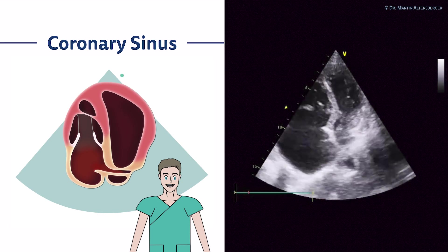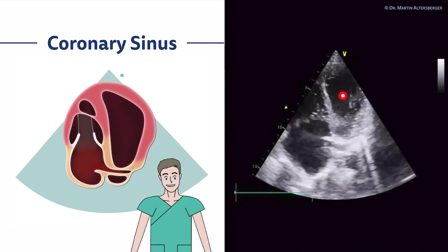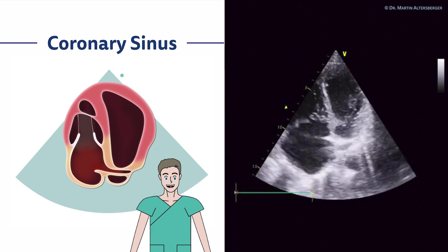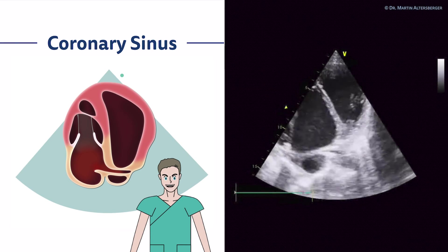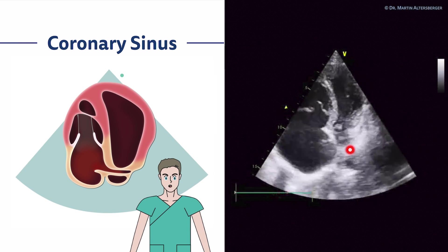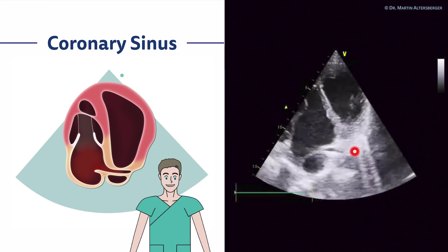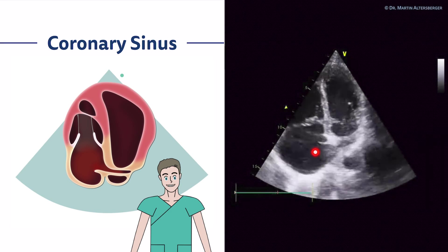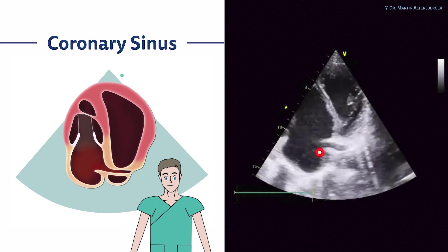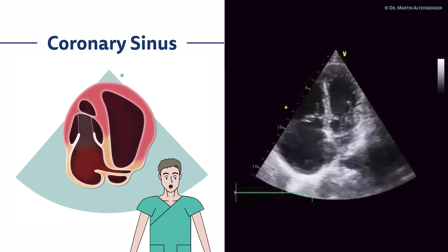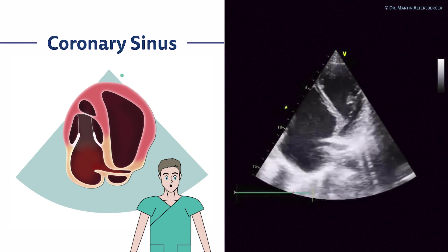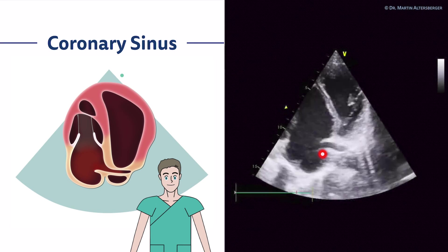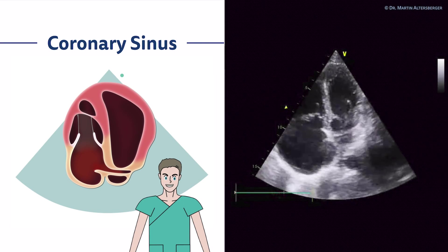In the coronary sinus view, here is a patient with Ebstein anomaly. You can see the left ventricle, the right ventricle, the right atrium, and the valve inserting very high in the right ventricle. There is also a venous structure leading into the right atrium, and an additional small structure that could be a valvula Thebesii — a small valve of the coronary sinus, a remnant of early cardiac development — or it could be a rete Chiari.